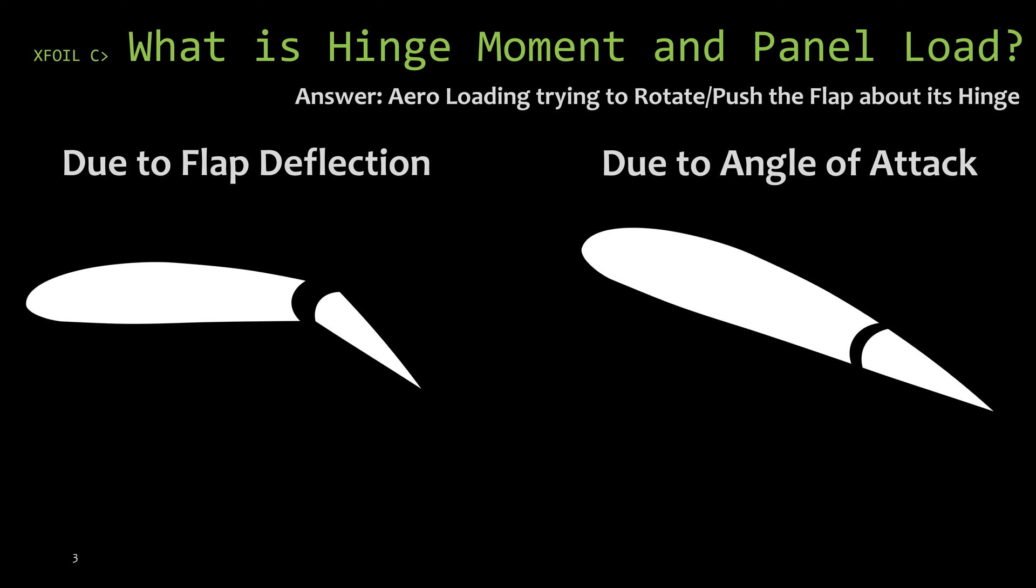Hinge moment is a result of the aerodynamic forces on control surfaces when it's placed in a stream of air. This aero loading is trying to deflect or rotate the control surface about its hinge, and there's two reasons for it.